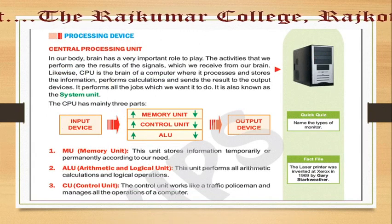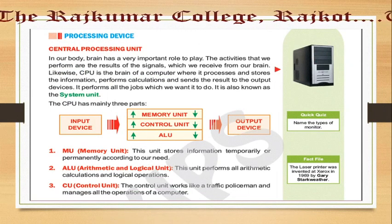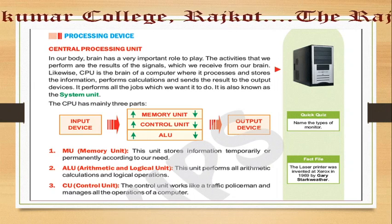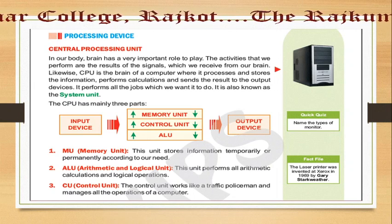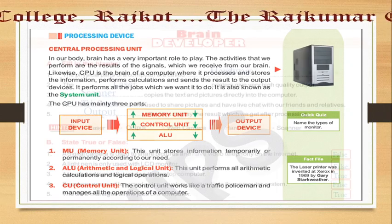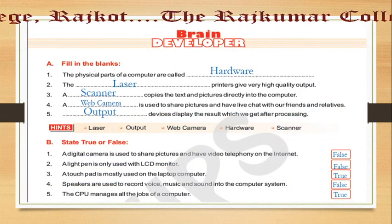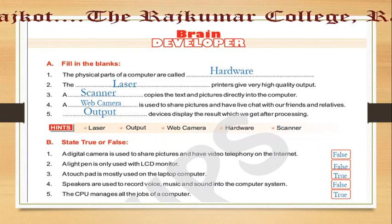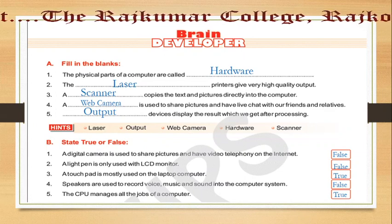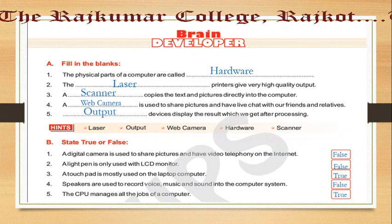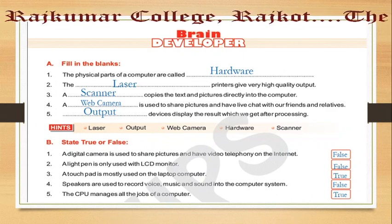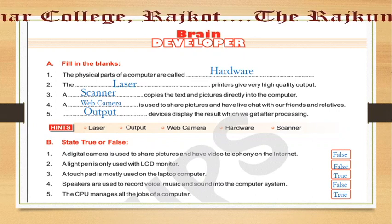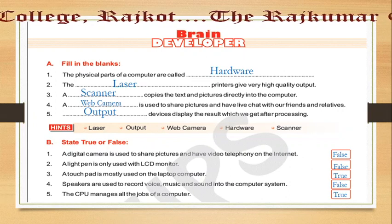Then processing device — we also showed a video on this in a previous session as revision. Then central processing unit, which means CPU. Now this is important because I want to explain the exercise given in your textbook in lesson 1. So first I start from fill in the blanks. First one: the physical parts of a computer are called blank — and the answer is hardware.